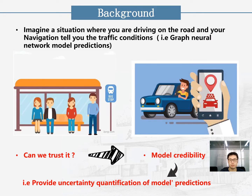Let's start with the background. Imagine a situation where you are driving on the road and your navigation tells you the traffic conditions. We can imagine our navigation as a graph neural network model. A problem arises: can we trust it? This leads to the credibility of the model. It is really important for us to provide the uncertainty quantification of the model's prediction.